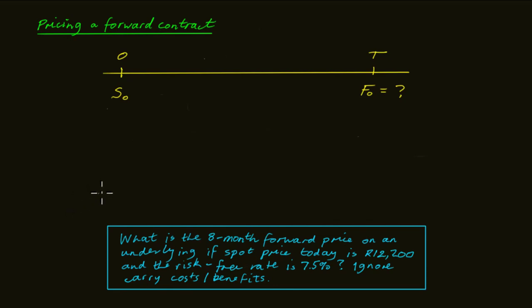Let's begin by entering what we know. We have a risk-free rate of 7.5%. We have a time frame of eight months. And we have a spot price today of 12,200 Rand.